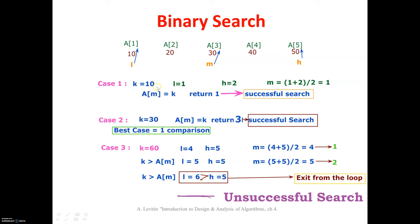For Case 1, k equals 10. Compare 10 with the mid element — key is less than the mid element, so the lower limit remains l equal to 1 and h is set to m minus 1, which is h equal to 2. Find the mid value equal to 1. Key 10 is compared with a[1], which is 10 — element found. Return m, that is return 1.